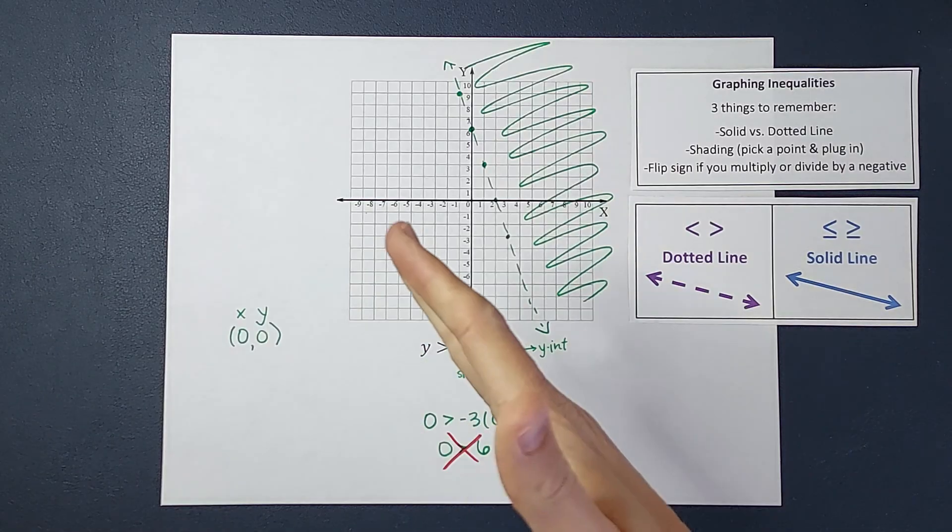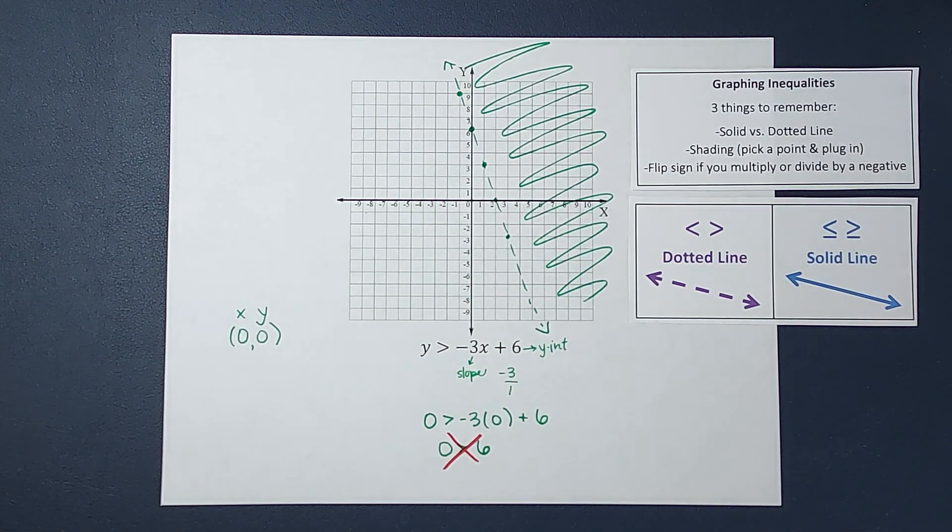Now if you need an example where we can't use 0, 0 because the line is along there, I'll link one in the corner. But hopefully this made sense, and you can get your homework done. Thanks, bye!